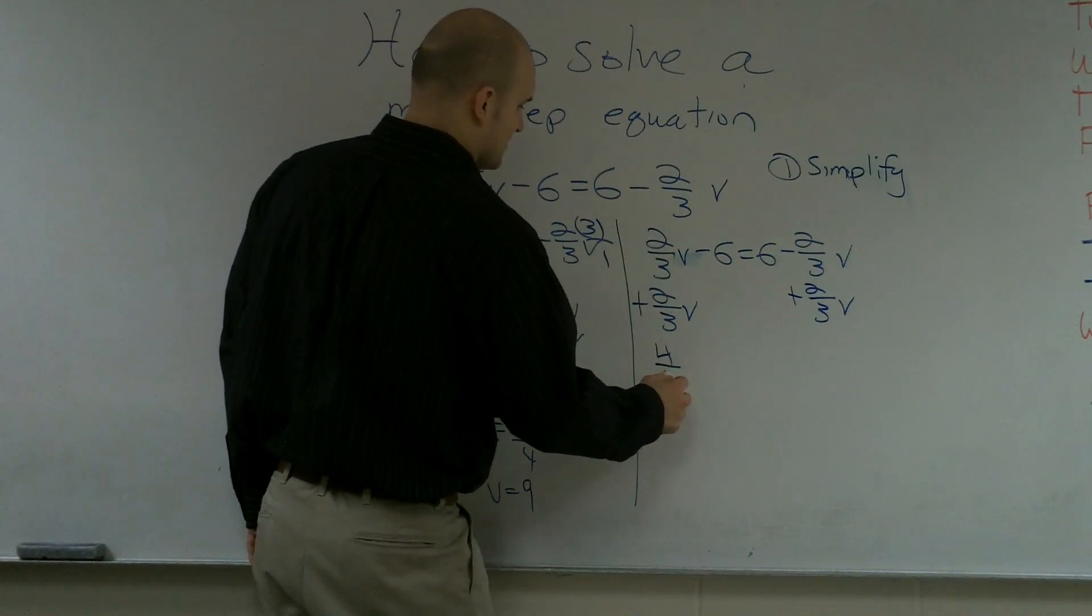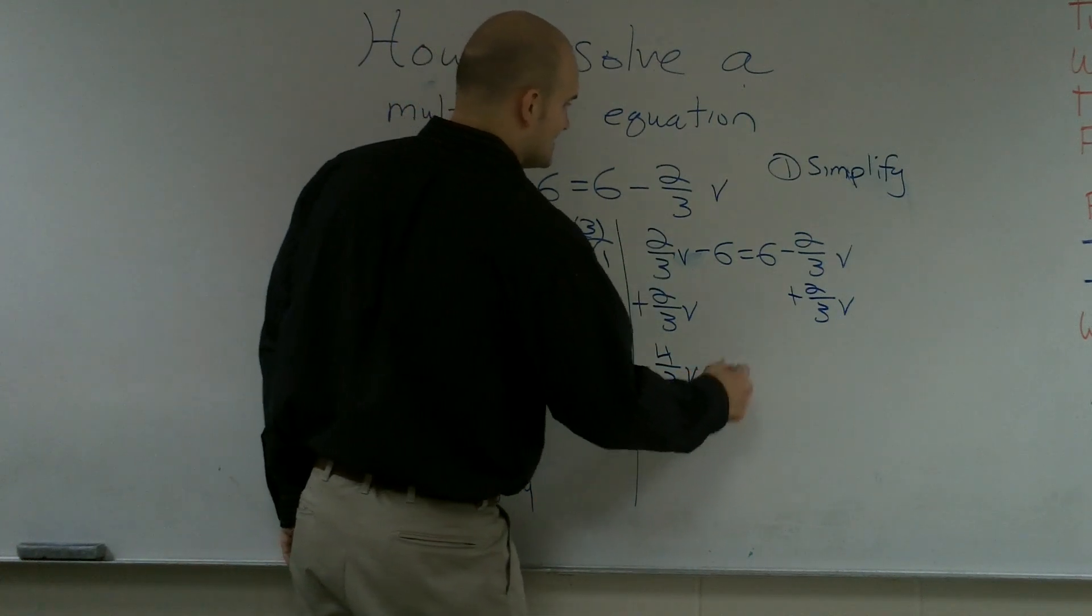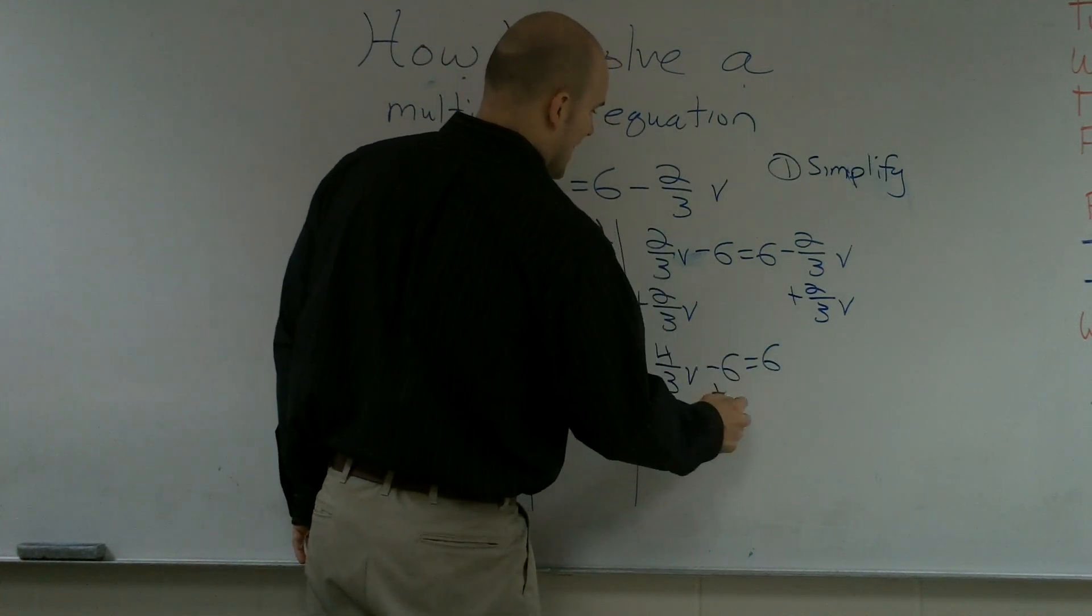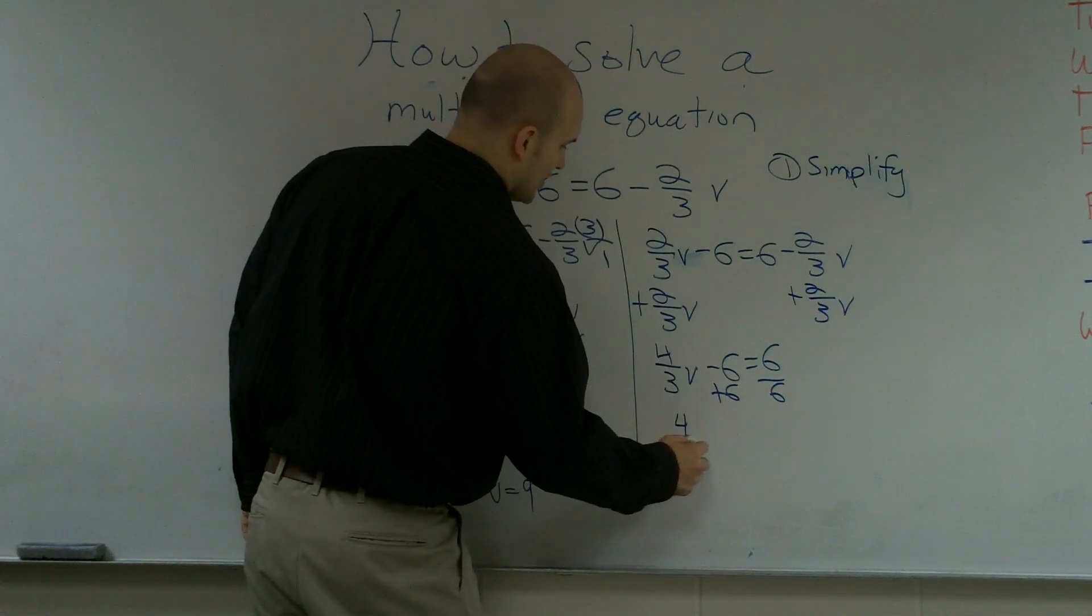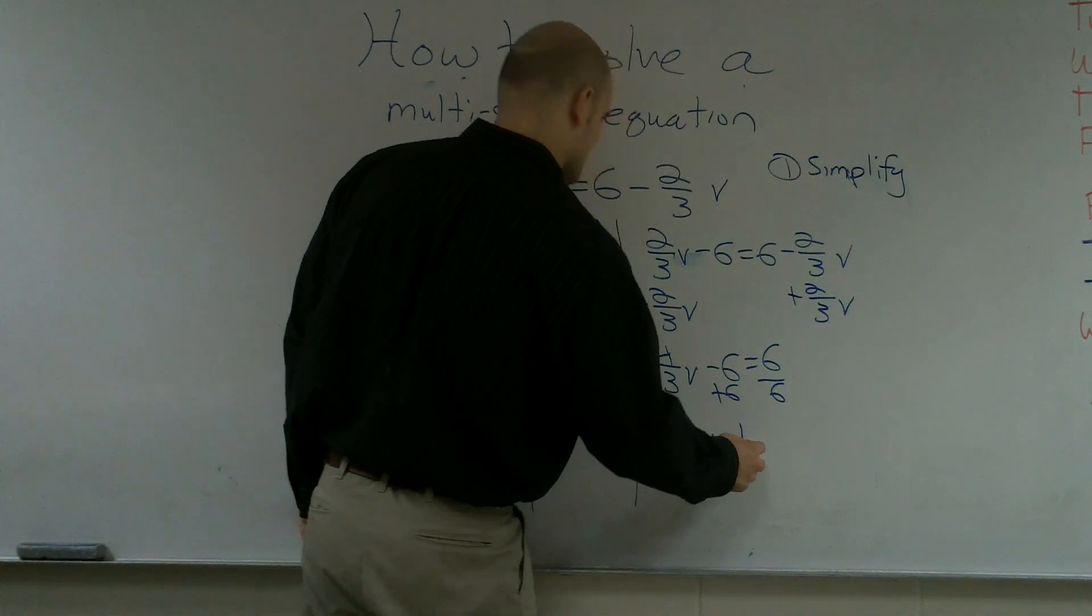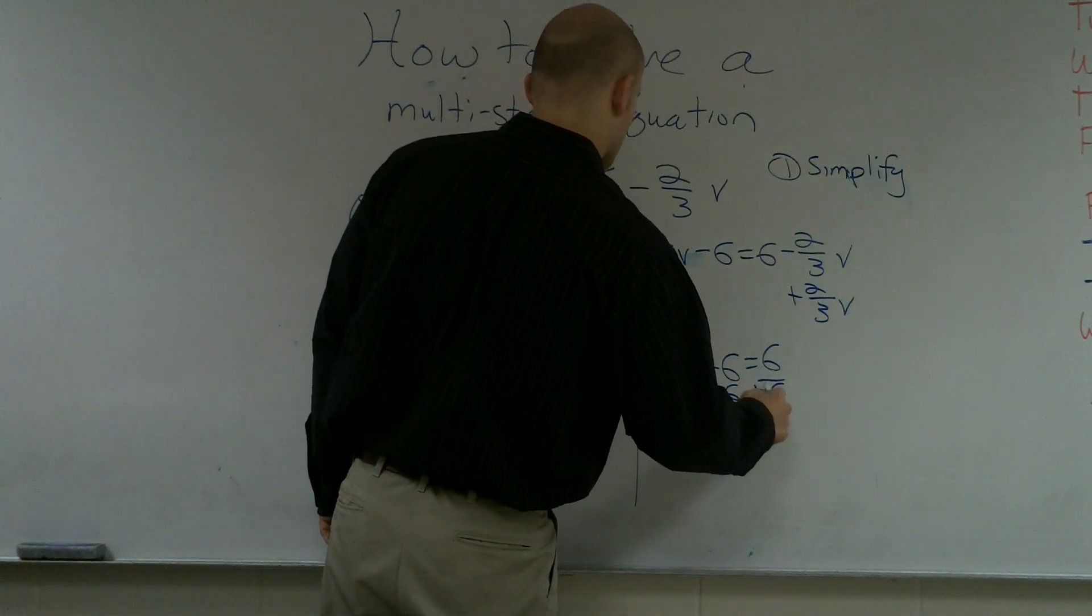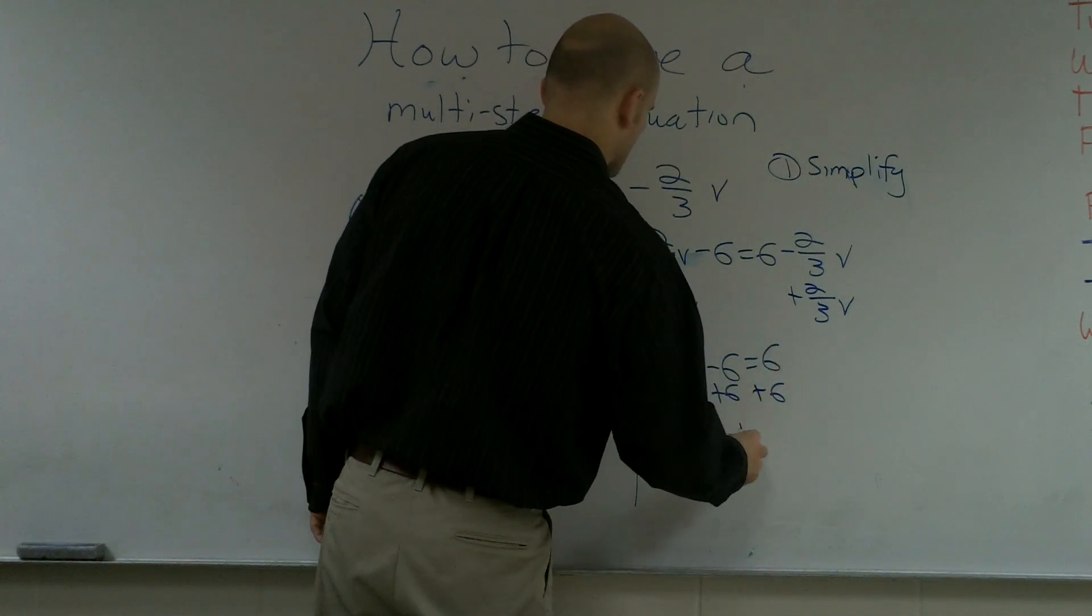Therefore, now I get four-thirds V minus 6 equals 6. Add the 6 to both sides. Therefore, I get four-thirds V equals 12.